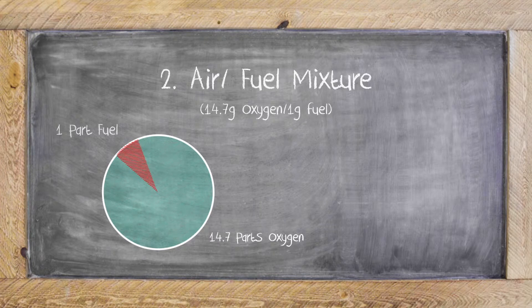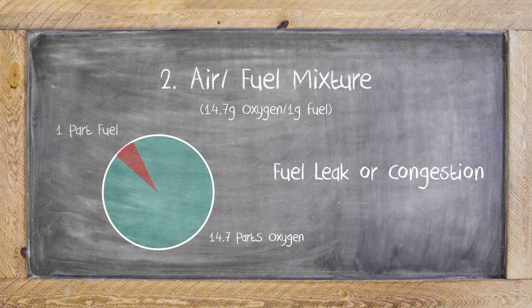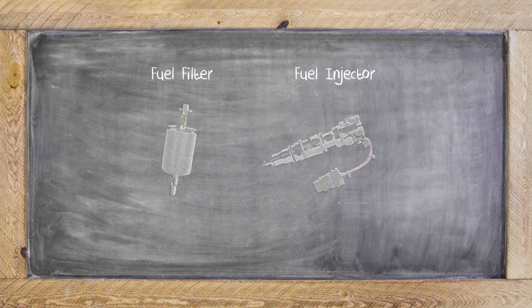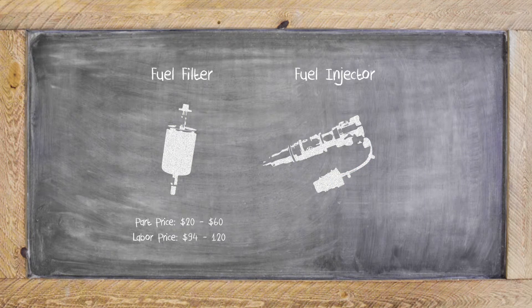Second, it could be on the fuel side of the mix. This usually has to do with a fuel injector or a fuel filter. We suggest changing the fuel filter first, because this is usually a cheaper fix — around $20 to $60 without labor — whereas the injector is electric and more complicated, and can be anywhere from $600 to $1,100 for parts alone.